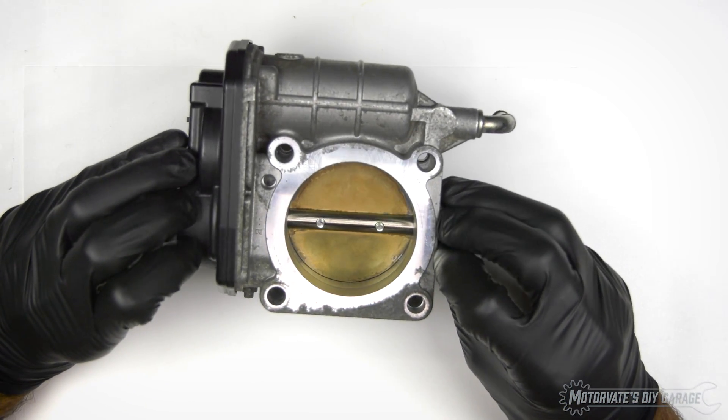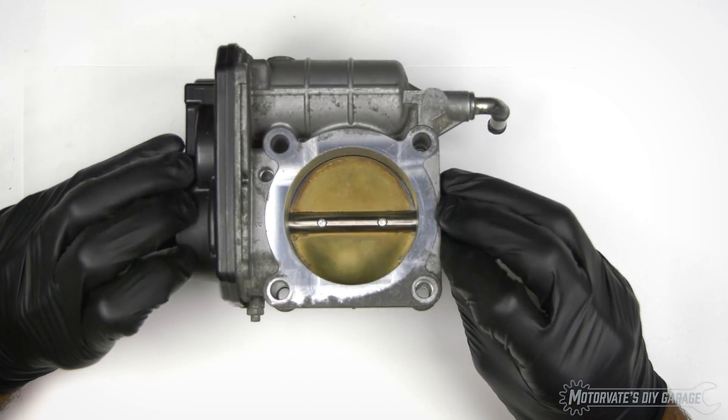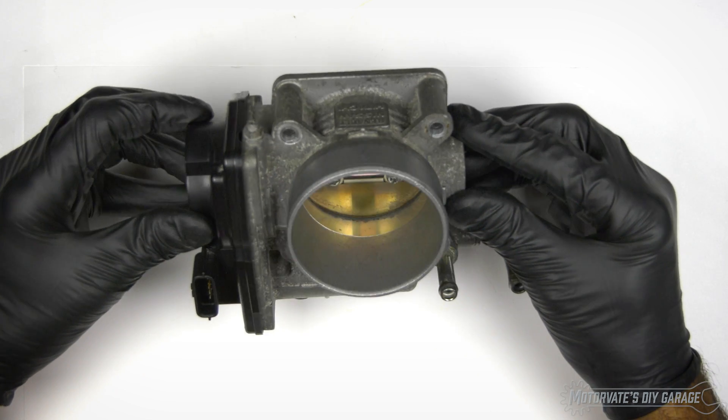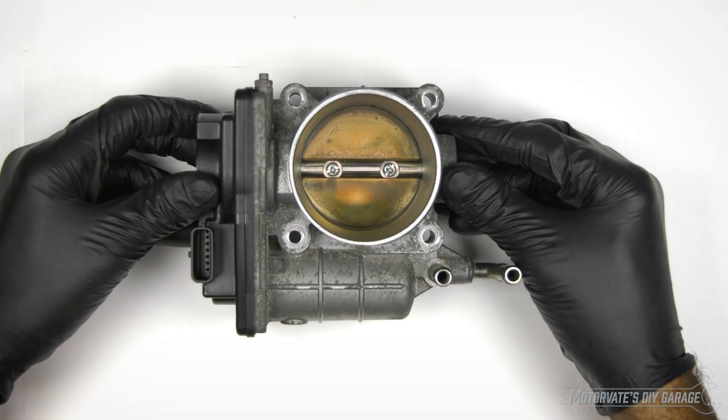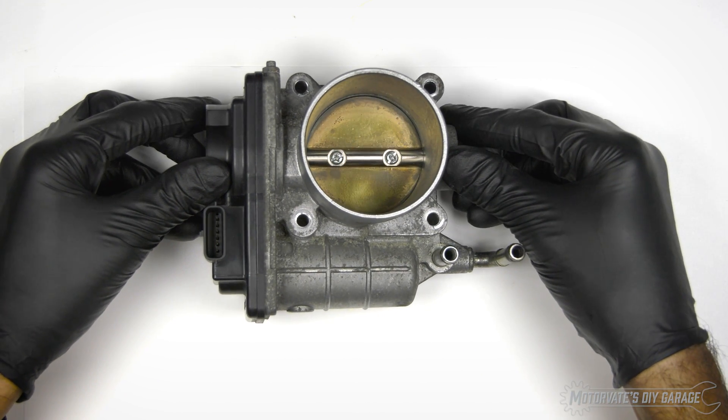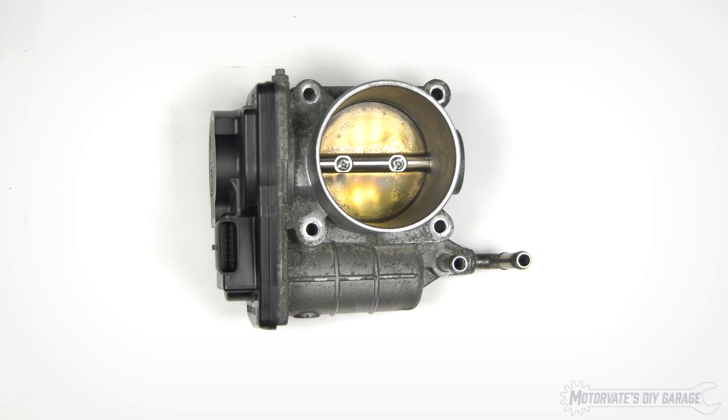Now, the throttle body used in this episode is from an Infinity G37, which is typical of most electronic throttle bodies. Thank you for watching, and if you have any questions or comments, please leave them below.